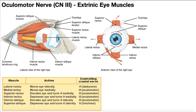Then we have the inferior rectus, which depresses the eye and also turns it slightly medially. And then we have the inferior oblique muscle — this one elevates the eye and actually turns it a little bit laterally.